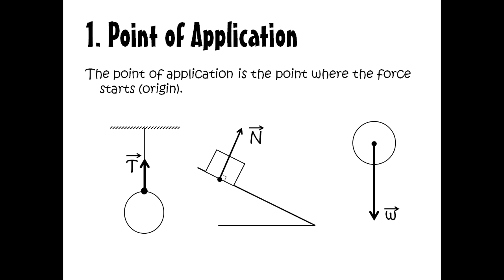The first characteristic is the point of application — it's the point where the force starts or originates. As you can see in these three examples: in the first drawing, the tension starts from this point, and so does the normal as well as the weight. The normal force is the force exerted by the support, by the table on the box. And the weight vector W starts from the center of the ball.